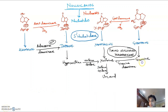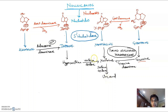Hypoxanthine forms xanthine in the presence of xanthine oxidase, and xanthine oxidase then forms uric acid. Xanthine oxidase is a molybdenum-containing enzyme. So this finally forms uric acid.